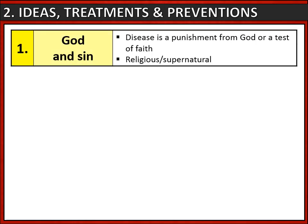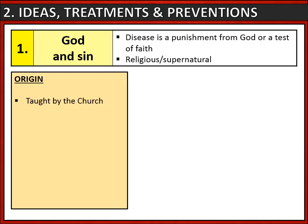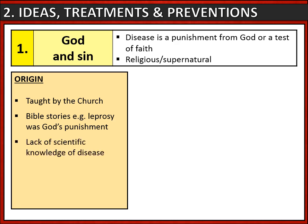Let's look at the main ideas, treatments and preventions that were around in the medieval period. First up, God and sin. This was the idea that disease was a punishment from God or a test of faith. It was taught by the church and reinforced by Bible stories where diseases like leprosy were seen as God's punishment. It was also encouraged by the fact that there was a lack of scientific knowledge of disease, so people found it difficult to challenge the church's teachings.